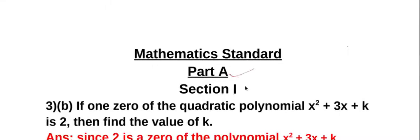Mathematics Standard Part A, Section I, Question number 3(b): If one zero of the quadratic polynomial x² + 3x + k is 2, then find the value of k.